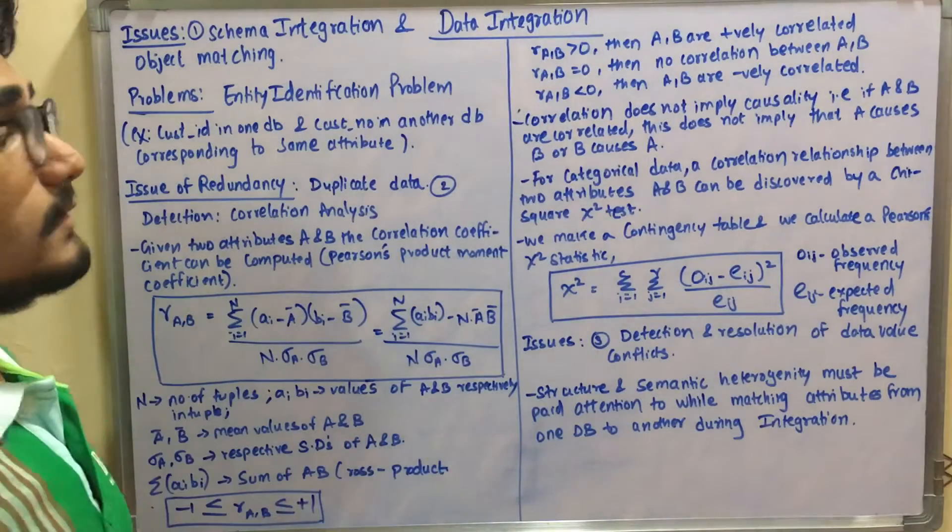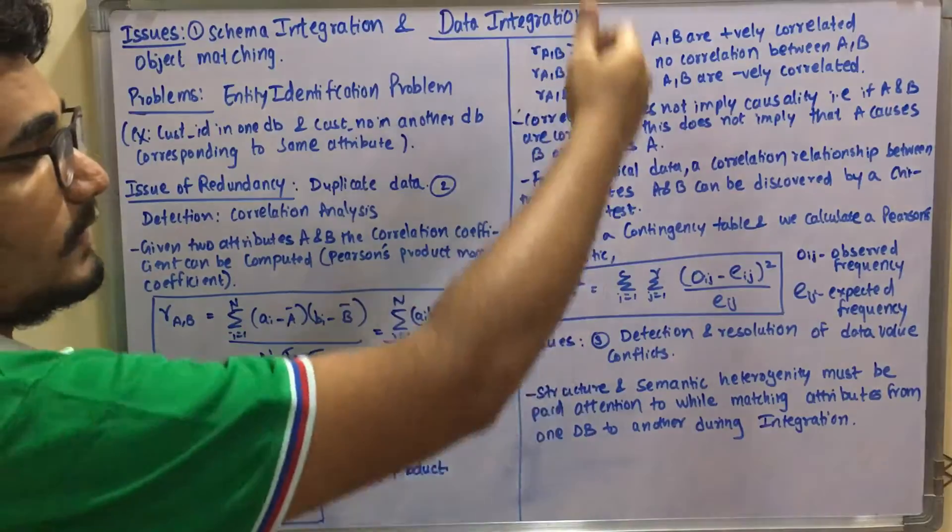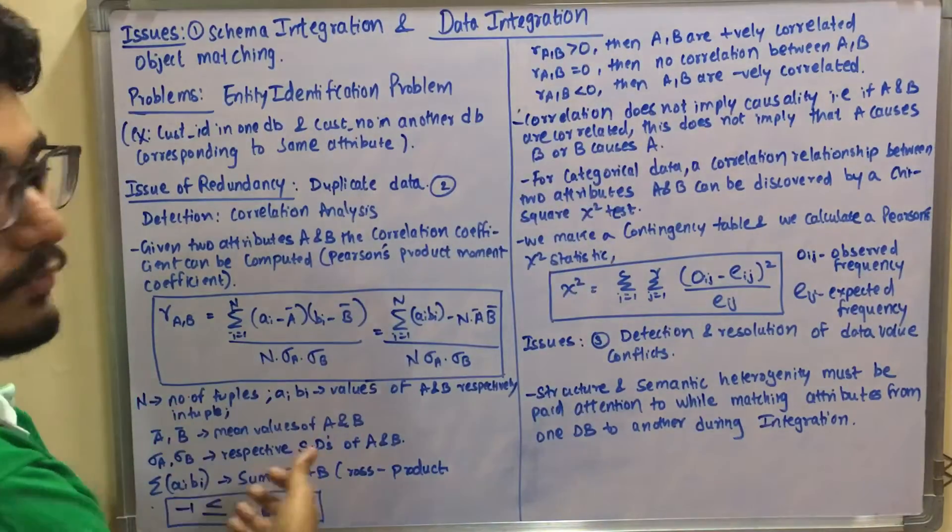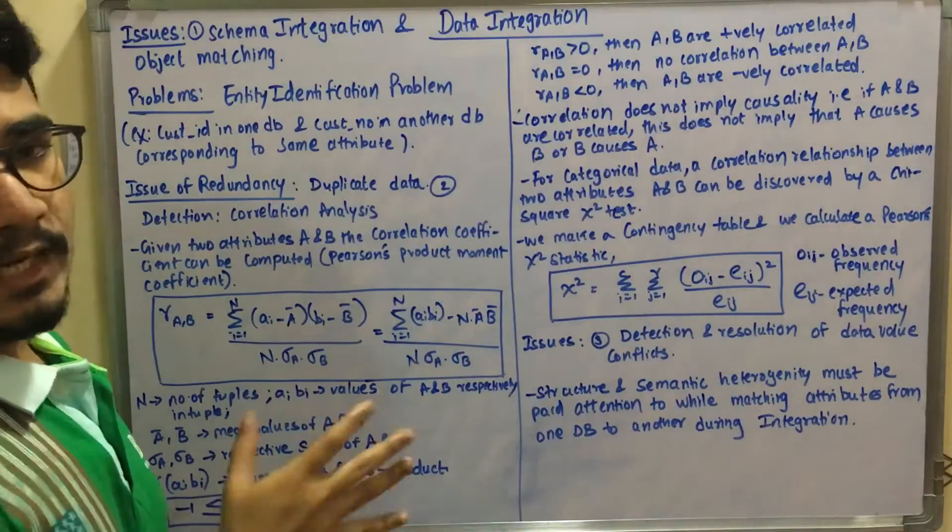If r_AB is less than zero, then A and B are negatively correlated. These are the inferences you can get when you solve this equation.